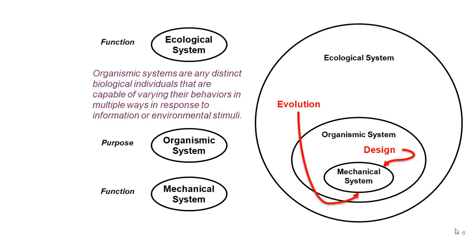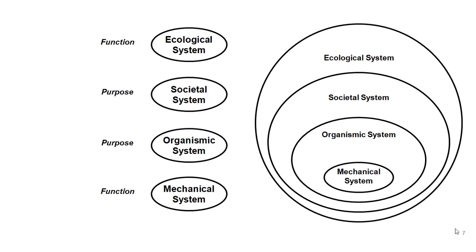As engineers, we want to put design into things. We design mechanical systems — information technology systems are a good example — to perform functions that enable us to better serve our purposes. The main level industrial and systems engineers are interested in is societal systems. An organization is a great example of a societal system. We tend to engineer new organizations and relationships among organisms within our ecosystems, and more often than not the target of our engineering is some form of societal system.